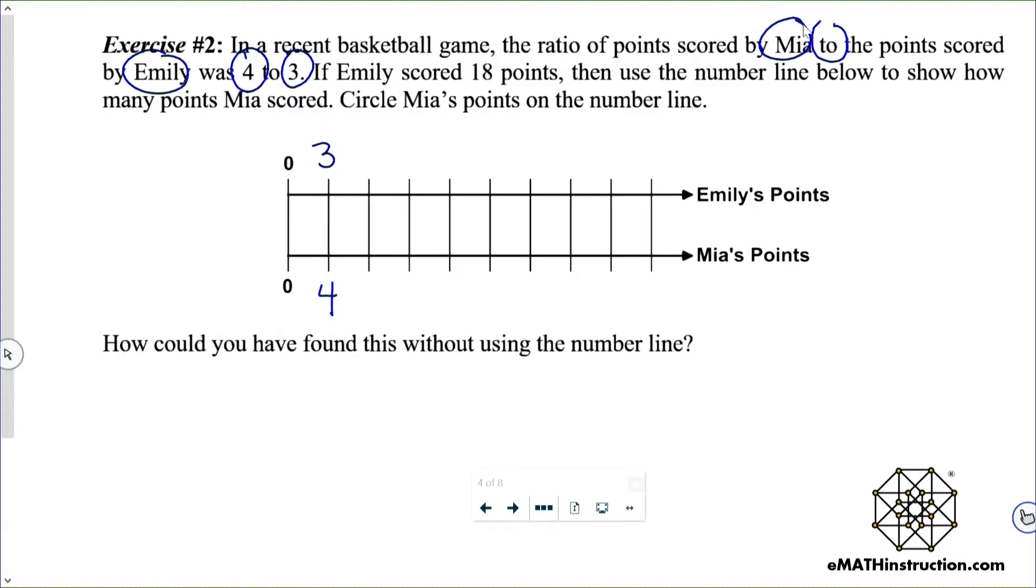So now let's keep going. That means that Emily's number line is going to go by 3's. So it's going to be 6, 9, 12, 15, 18, 21, 24, 27, etc.